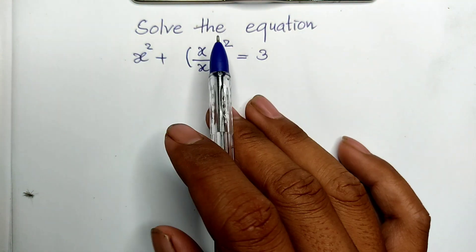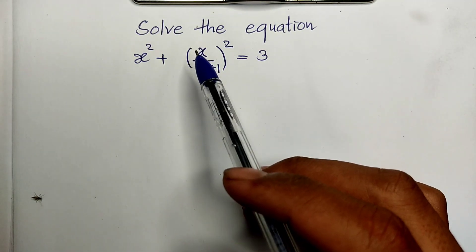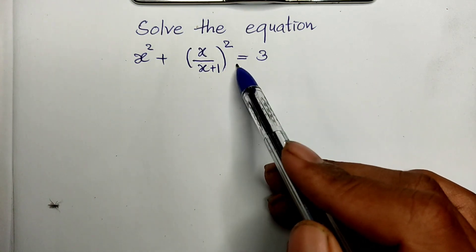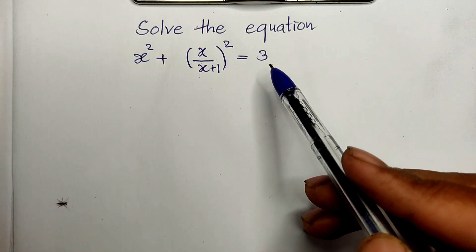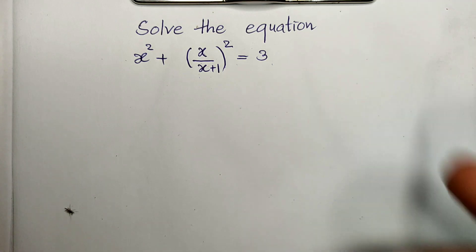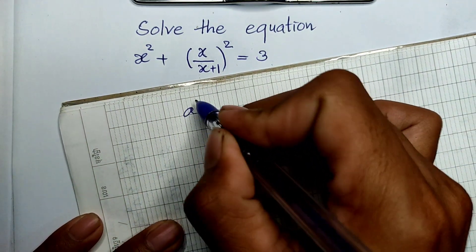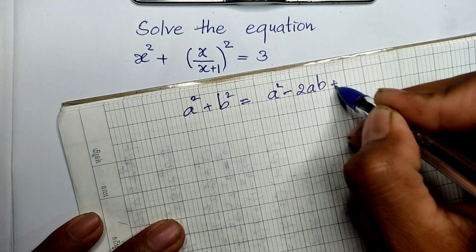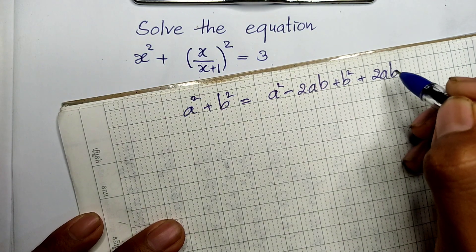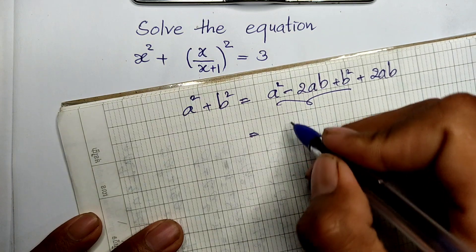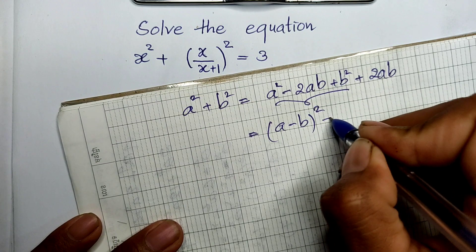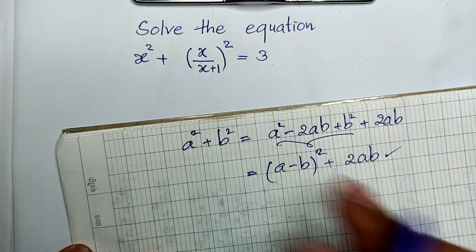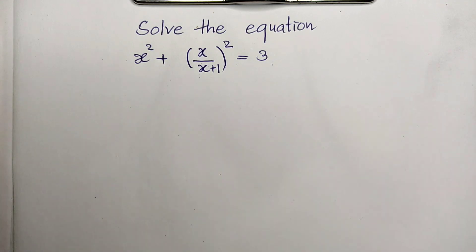Now, to solve this equation, I have one trick. Look at this trick. We have h squared plus h divided by (h plus 1), all squared, equals 3. The trick is that if we have a squared plus b squared, you can write it as a squared minus 2ab plus b squared, plus 2ab, and this is equal to (a minus b) squared plus 2ab.